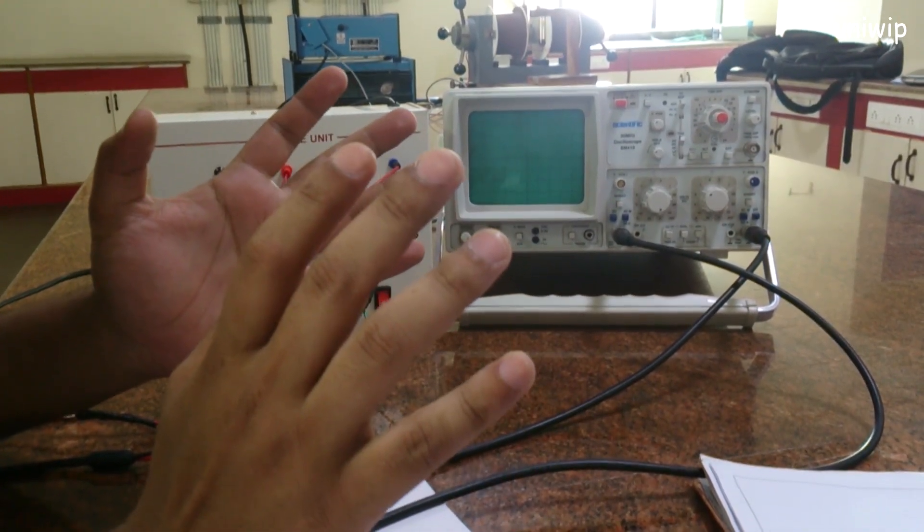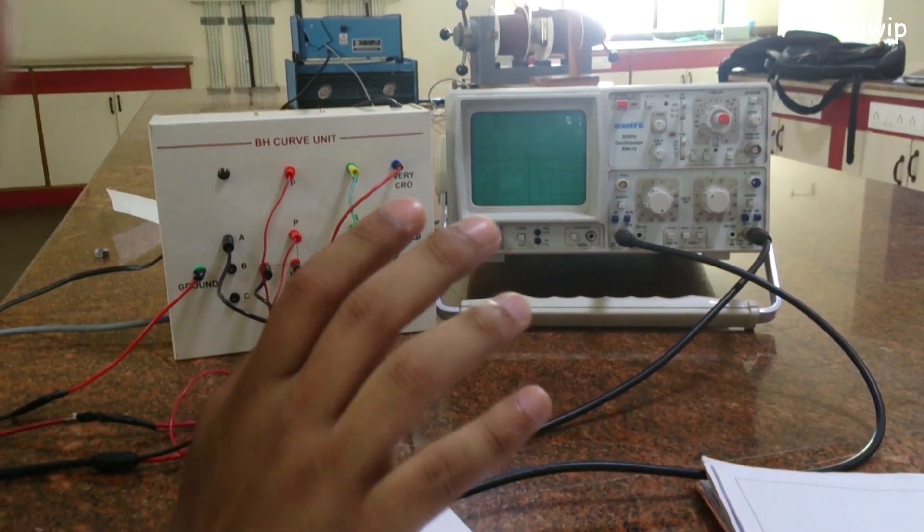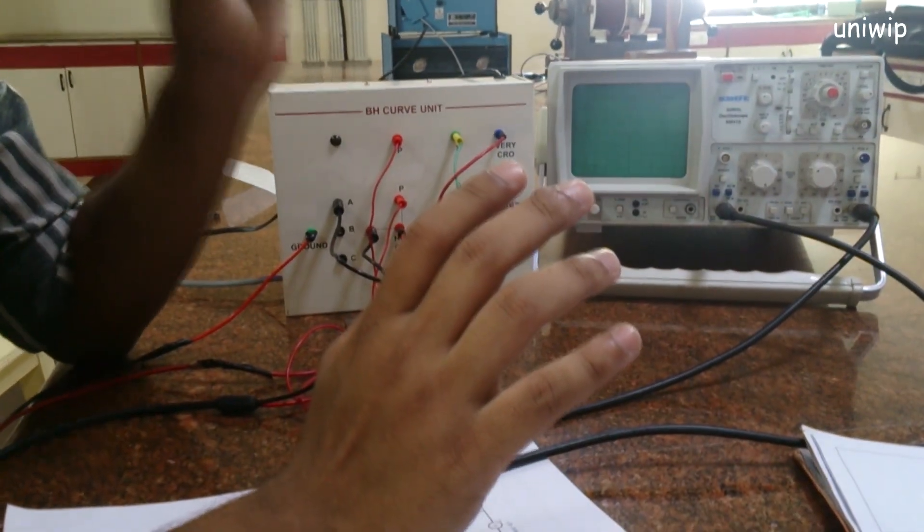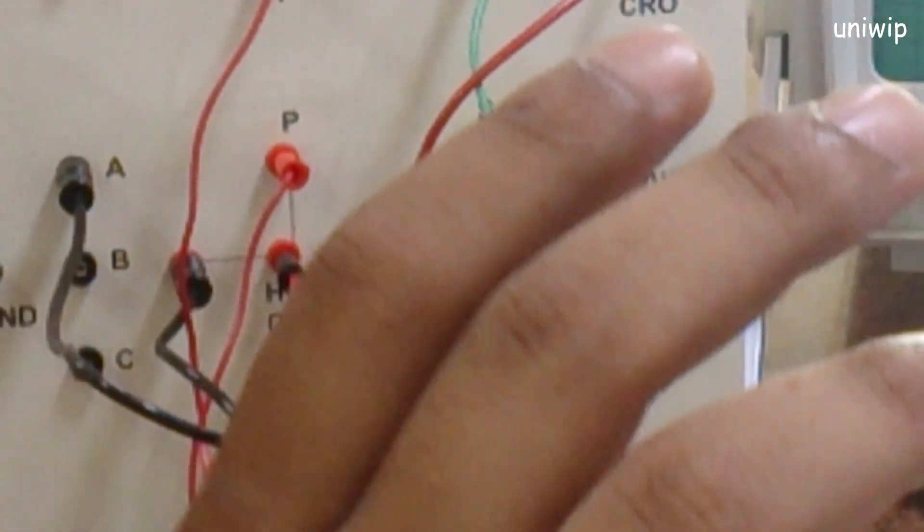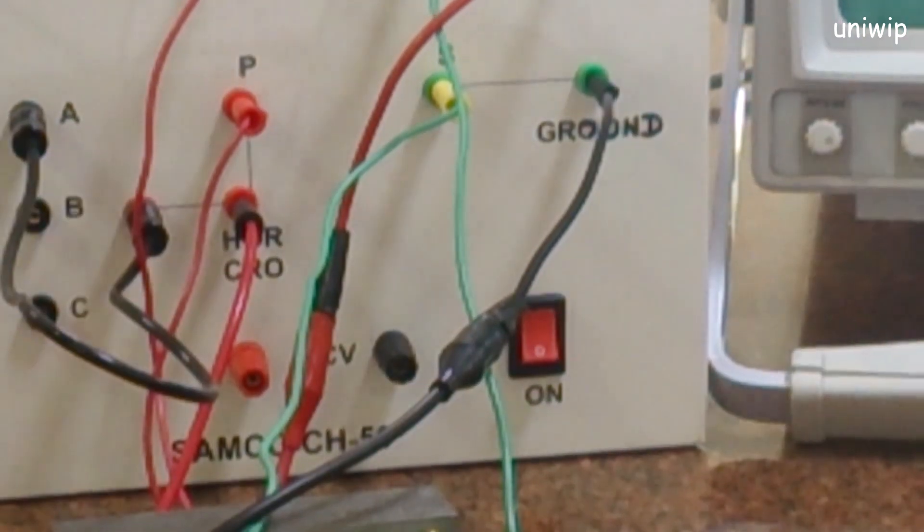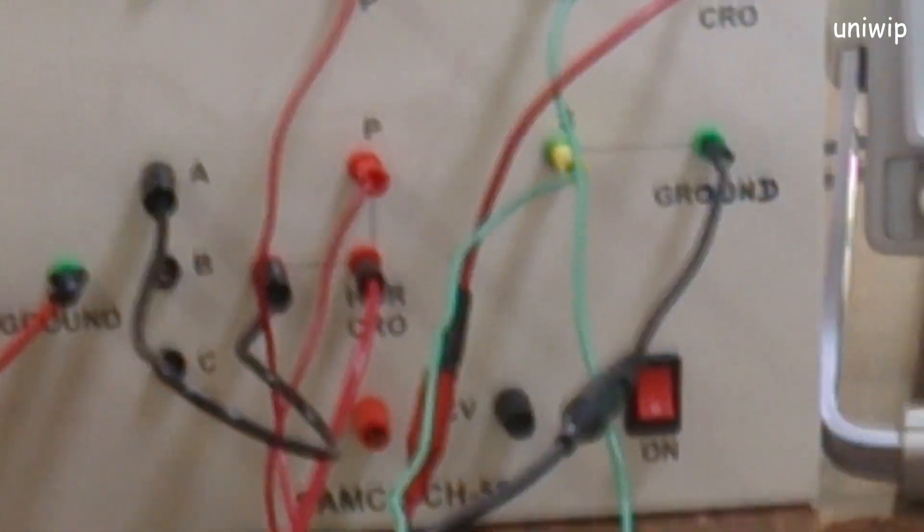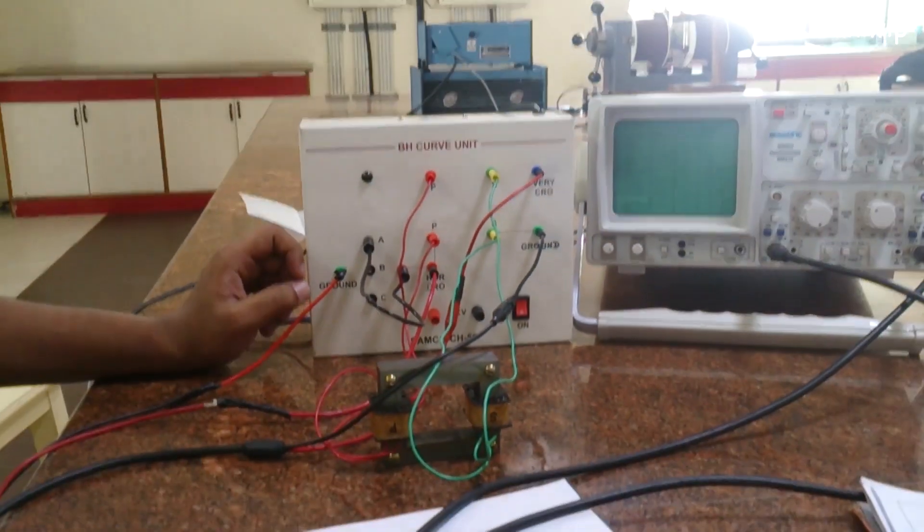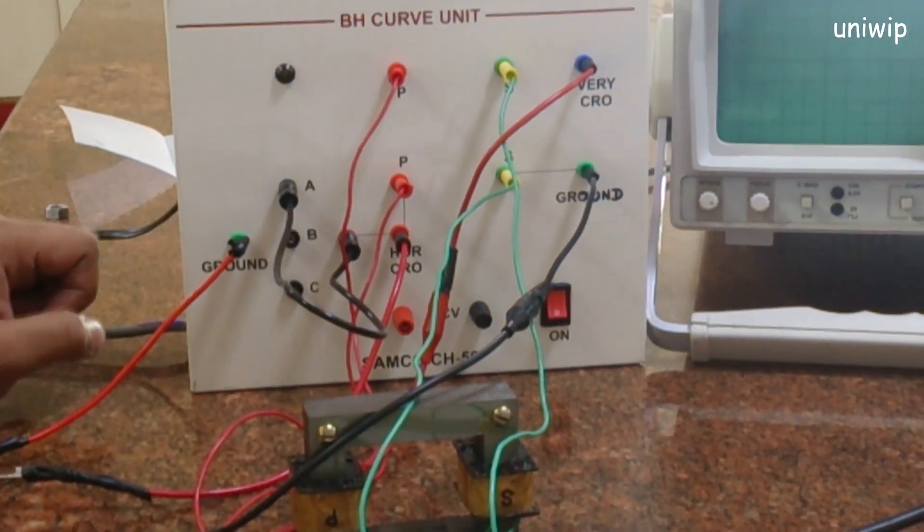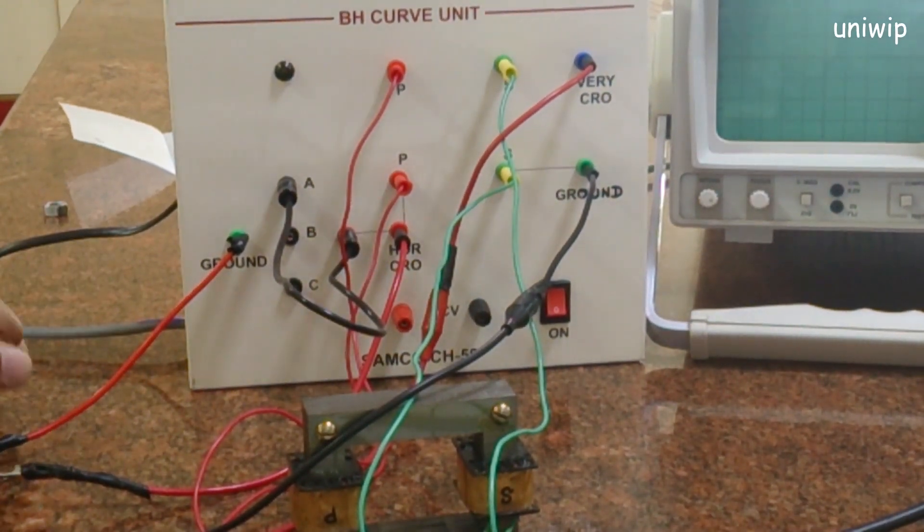So what happens over here is A, B and C are resistors. The value of A is 5 ohm, the value of B is 15 ohm, and the value of C is 50 ohm. So I hope you understood the normal setup.